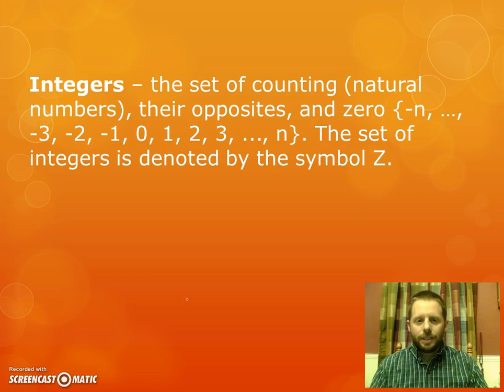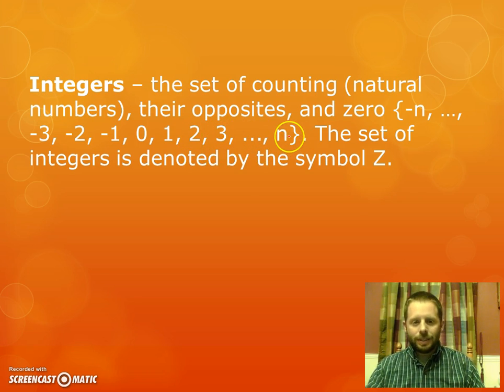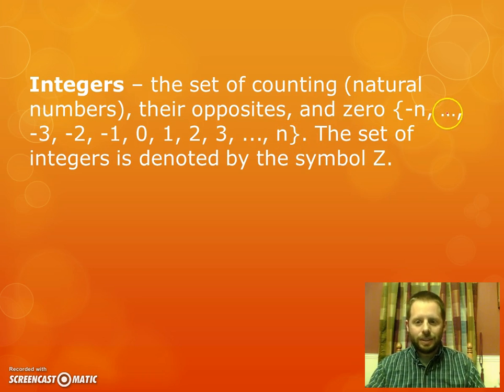First off, let's get to know what an integer is. It's defined as the set of counting or natural numbers, their opposites, and zero. So here in the example we show negative 3, negative 2, negative 1, 0, 1, 2, 3. The three dots indicate that this pattern can continue on infinitely in this direction as well as in the opposite direction. The set of integers is denoted by the symbol Z. So if you ever see the capital letter Z, that's the set of integers.